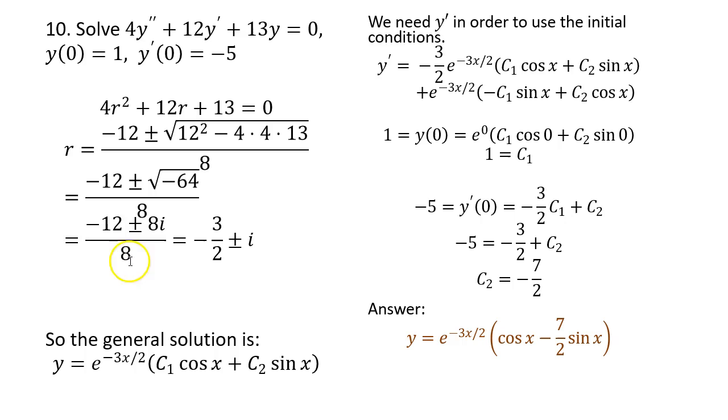We need to compute this and simplify and get negative 3 over 2 plus minus i. Now you should know that when you have your solution as a plus minus bi, then in that case the solution is e to the ax times c1 cosine of bx plus c2 sine of bx. In our case a is negative 3 over 2, so I put the negative 3 over 2 here. And then b is equal to 1 because b is the coefficient of i and it's 1 times i. So b is 1, so I simply have 1 times x and sine 1 times x.